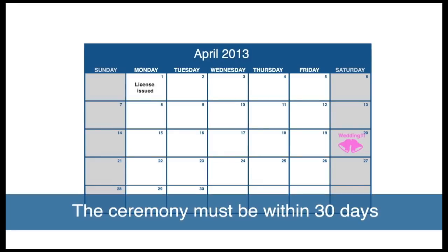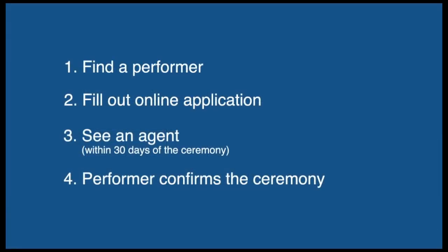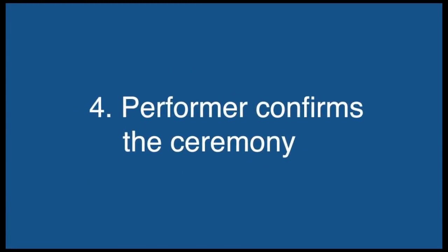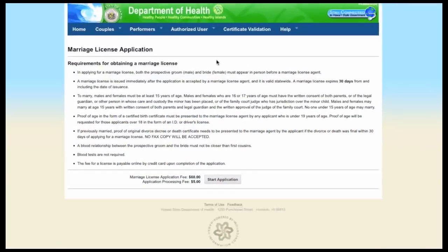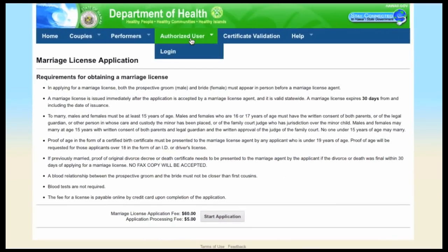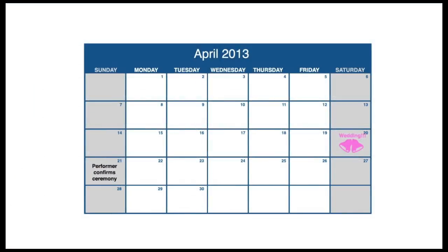Your ceremony must be within 30 days from when the license is issued. When the ceremony is over, the performer confirms the ceremony by using their online account. You have to wait three to five business days from when the performer confirms, then you can access your temporary certificate online.